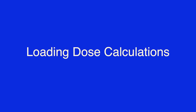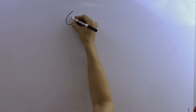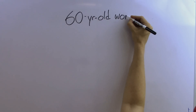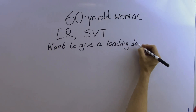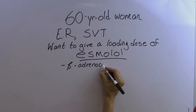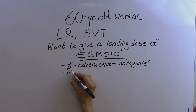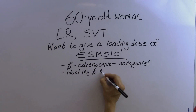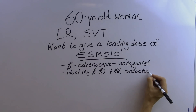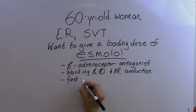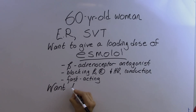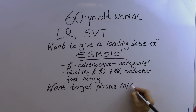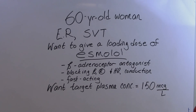Loading dose calculations. In this example, a 60-year-old woman is in the emergency room with supraventricular tachycardia. We want to give her a loading dose of the drug Esmolol. Esmolol is a beta-adrenoceptor antagonist that works by blocking beta-1 adrenoceptors in the heart to decrease heart rate and conduction velocity. It is a short-acting beta blocker, useful in emergency situations. We want to get her to a target plasma concentration of 150 micrograms per liter. She weighs 90 kilograms, so what loading dose should we use?